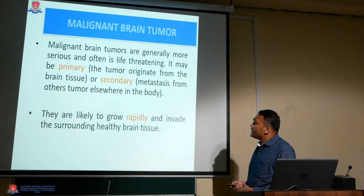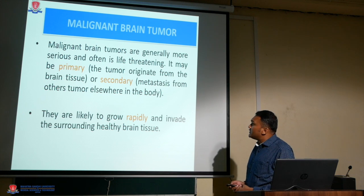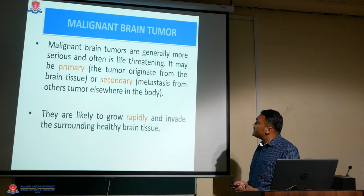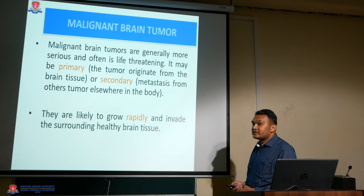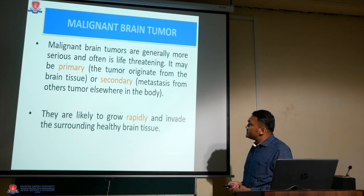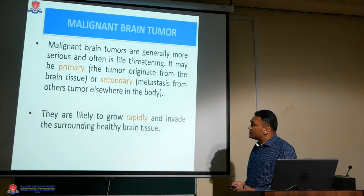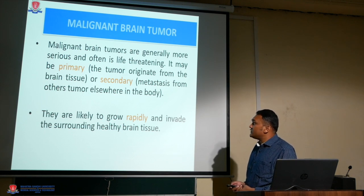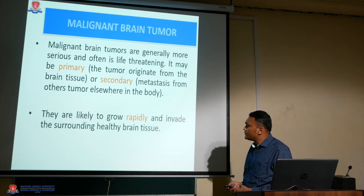Malignant brain tumors are generally more serious and often life-threatening. They may be primary, originating from the brain tissue, or secondary — metastasis from another tumor elsewhere in the body. They are likely to grow rapidly and invade the surrounding healthy brain tissue.